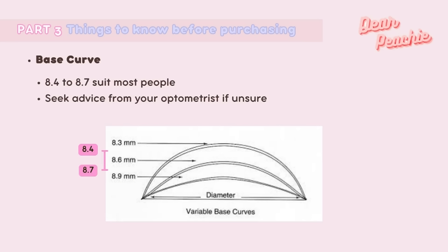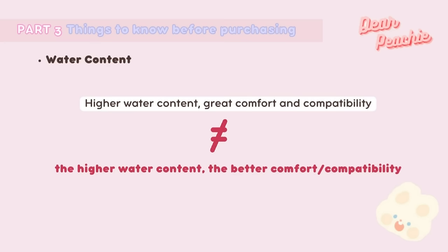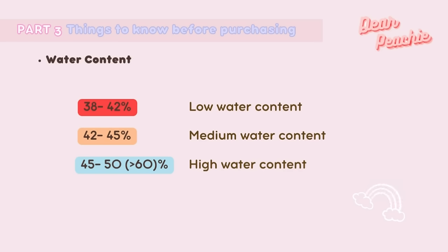Regarding base curve (BC): this measurement indicates the back curvature of your contact lens in millimeters. The BC of your lenses should match your eye's natural curve as closely as possible for comfort. A base curve of 8.4 to 8.7 suits most people — if unsure, consult your optometrist. For water content: higher water content ensures comfort, but higher is not always better. For six-month or yearly disposables, lenses with lower water content are suggested for those who wear them often or frequently in air-conditioned rooms.